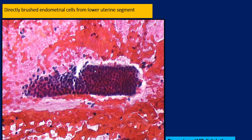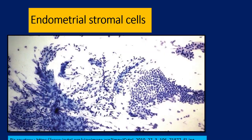At higher magnification, these directly brushed endometrial cells show palisading nuclei with extremely closely packed nuclei, but on close inspection the nuclei are rather uniform, and in areas that are less closely packed there is a monolayered pattern. Spindle-shaped stromal cells from the lower uterine segment may also be seen under these conditions.